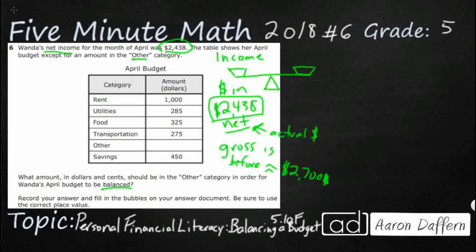On the other end are the expenses. It looks like we've got rent — paying $1,000 in rent. Utilities like water, electric, internet — that's $285. Food — that's $325, must be eating pretty good. Transportation — maybe this person doesn't own a car and is paying for public transportation or Ubers. And then we've got savings, which is a good amount. And then we've got this question mark — that's the mystery. What amount should be in the other category in order for her budget to be balanced?